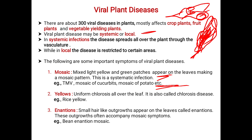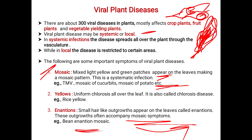Next comes enations. Small hair-like outgrowths appear on the leaves, called enations. These outgrowths often accompany the mosaic symptoms, appearing as hair-like projections on the leaves. The example is bean enation mosaic.